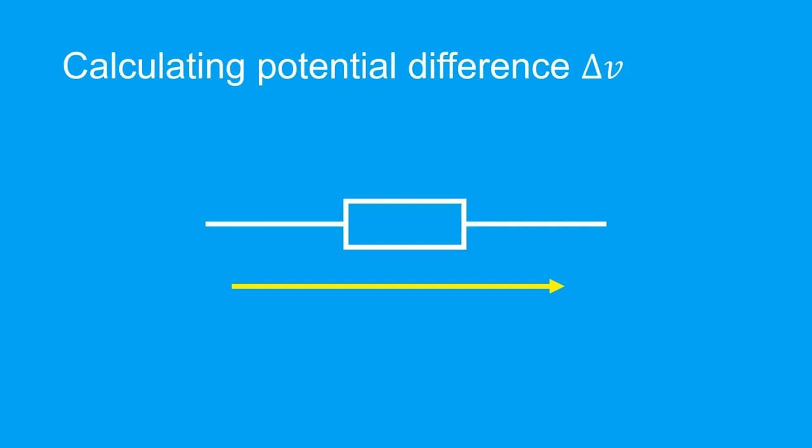We also happen to know the voltages of the nodes surrounding the resistor. This is called V_start to show the node voltage where the current starts entering the resistor. And this is called V_end to show the node voltage where the current ends its journey through the resistor. So to find the potential difference across the resistor, the convention is to take V_start minus V_end.